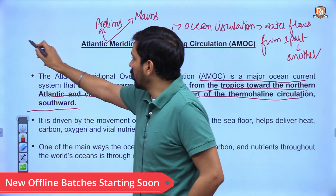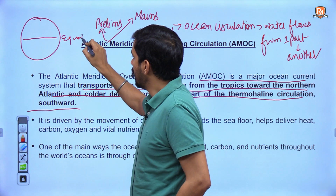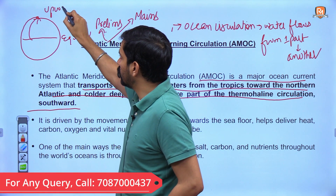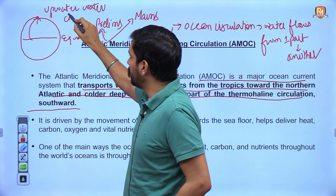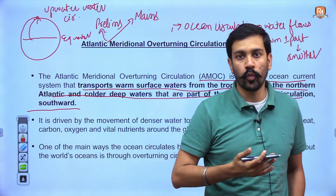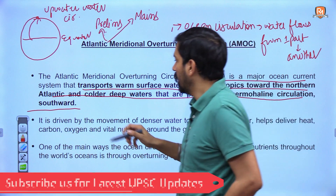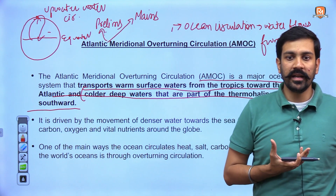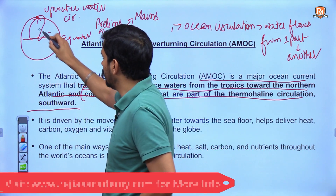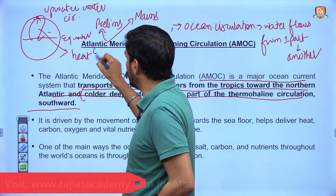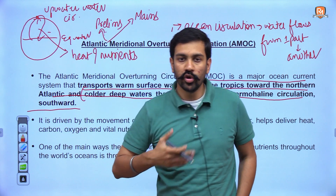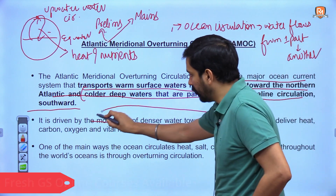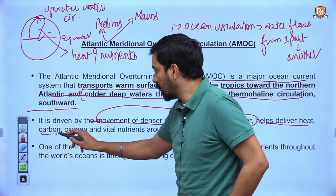Warm water from equatorial areas is transported towards the polar areas — this is the upper water circulation. In your geography classes you must have studied that hot water is at the upper level, whereas colder water sinks. Colder water from polar areas is transported back towards the southern areas. This is what is called Atlantic Meridional Overturning Circulation. Its significance is that it redistributes heat and nutrients throughout the world's oceans, driven by the movement of denser water towards the seafloor.